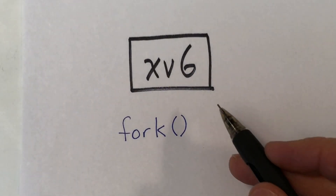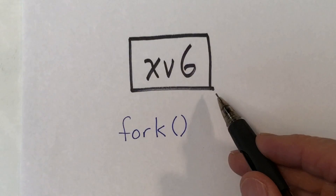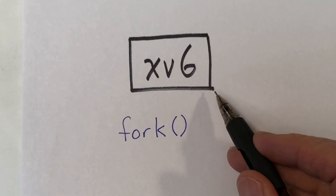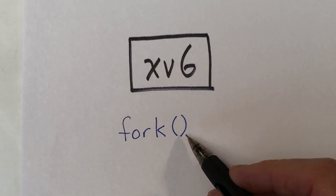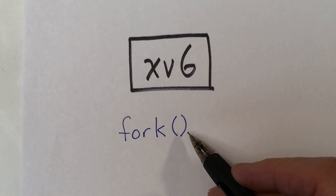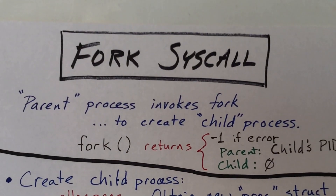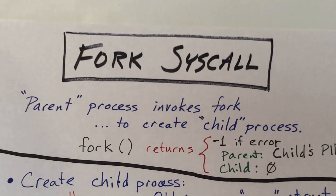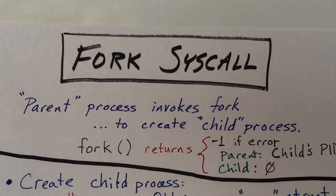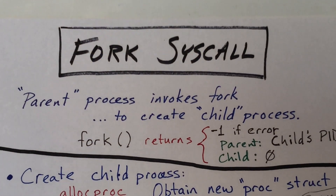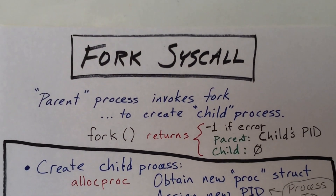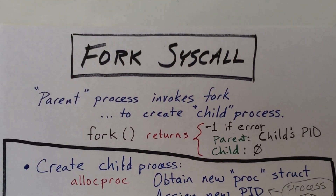This video is part of a series on the xv6 operating system kernel. In this video, I'll describe how the fork system call works. Whenever a process wants to create another process, it uses the fork system call, and this is the only way that processes are created, with the exception of the creation of the initial process.